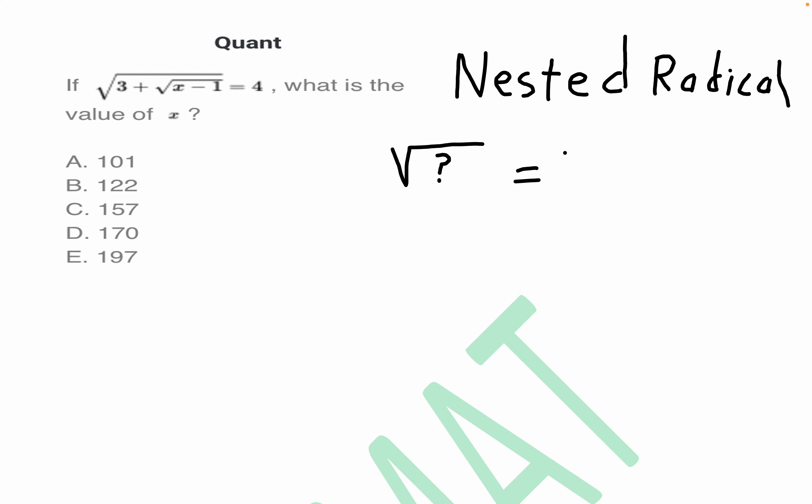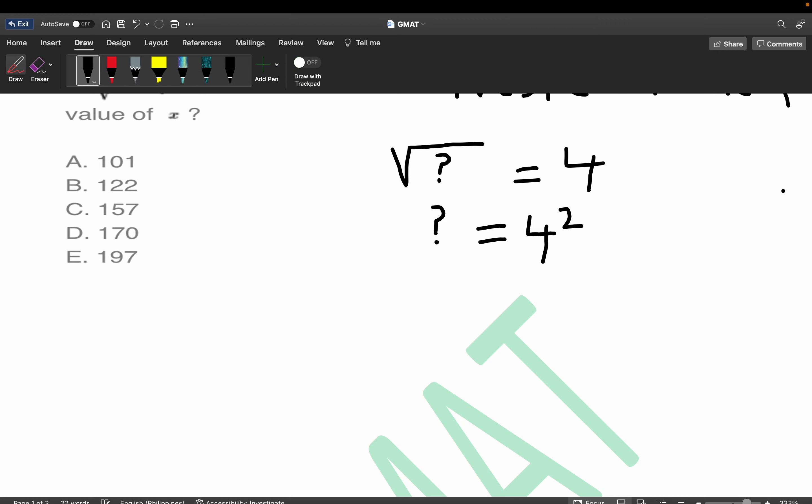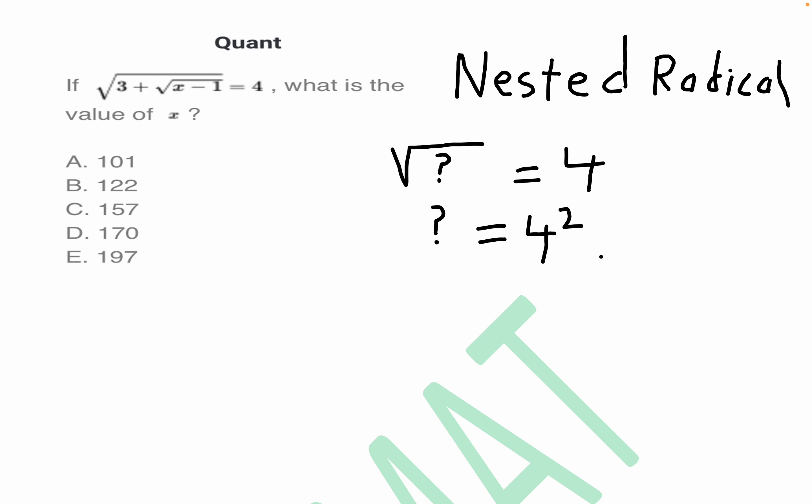What that means is if you square both sides of this expression, you just get question mark equals 4 squared. Squaring and square rooting are inverse operations, so of course this equals 16.